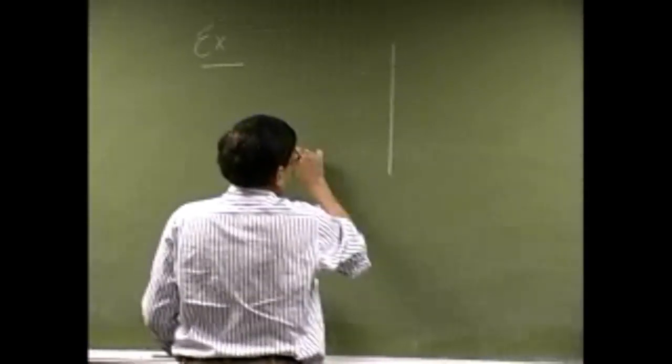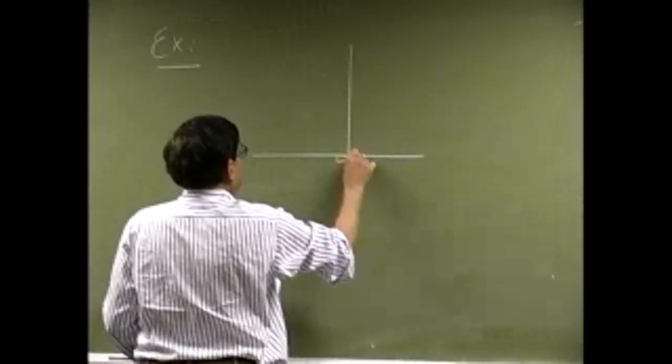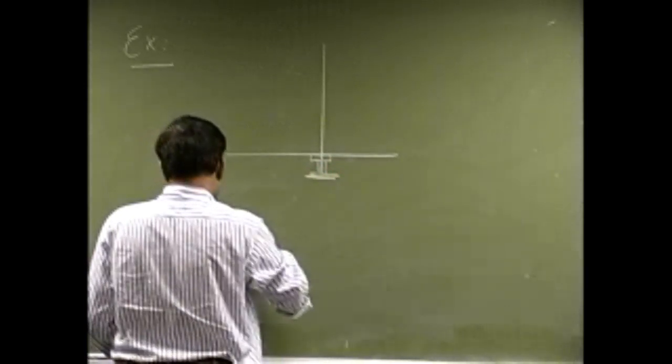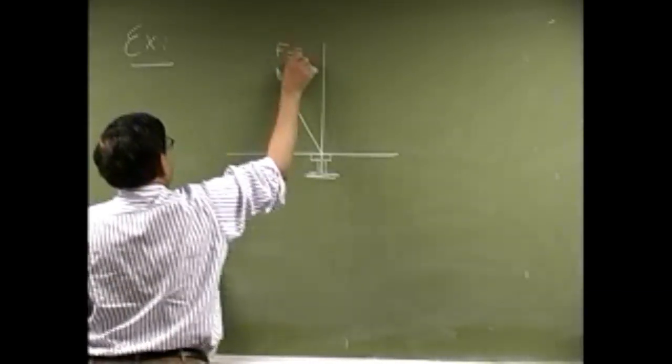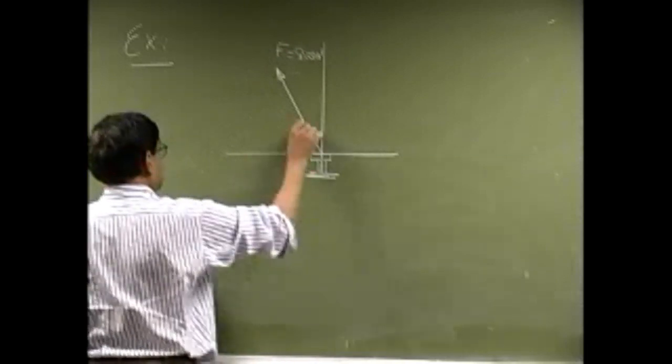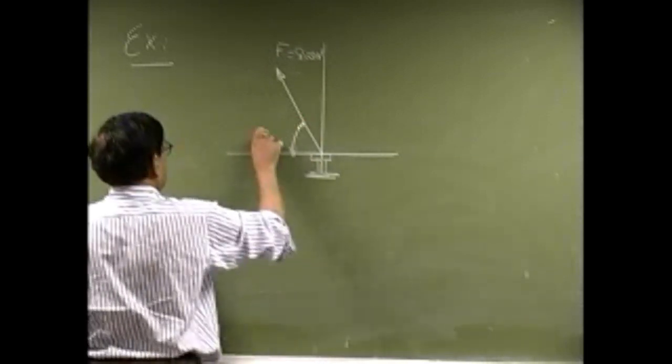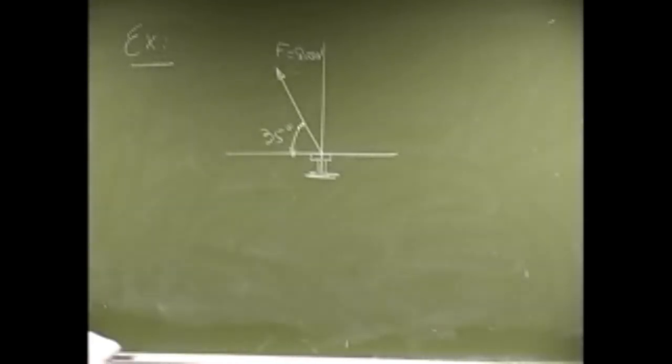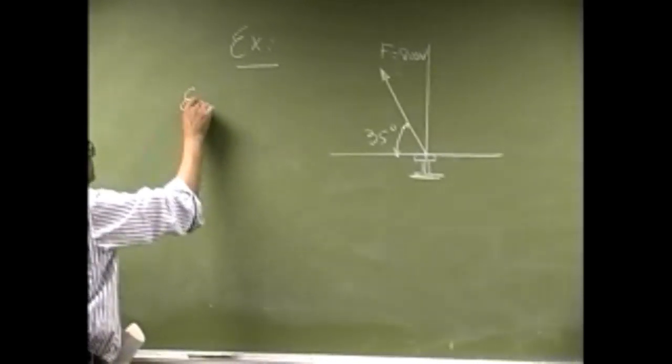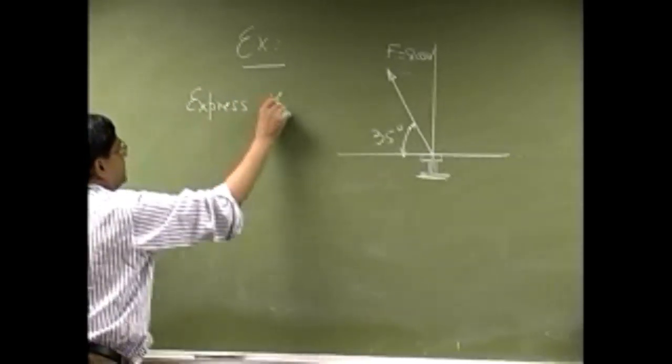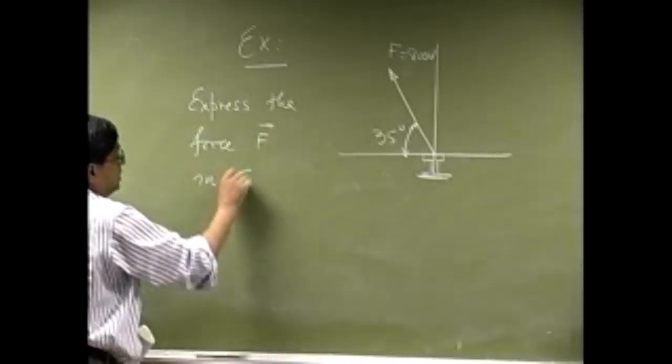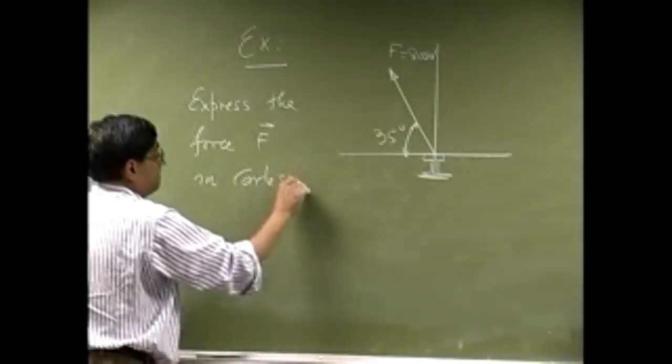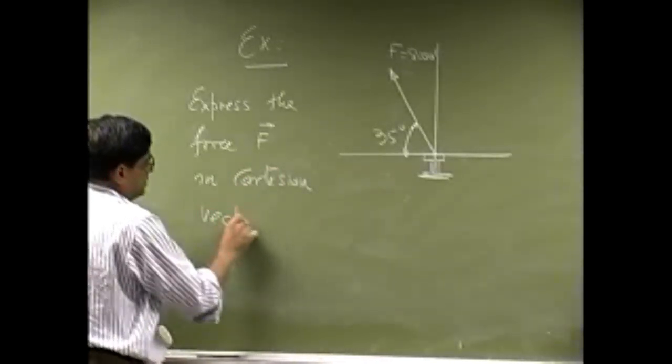I have a peg at this point and then the force here has magnitude of 800 Newton and it makes an angle of 35 degrees and the question is to express the force F in Cartesian vector form.